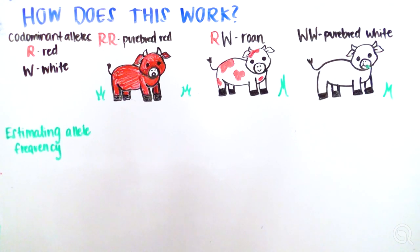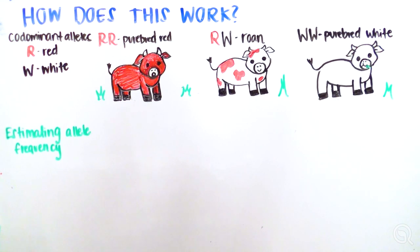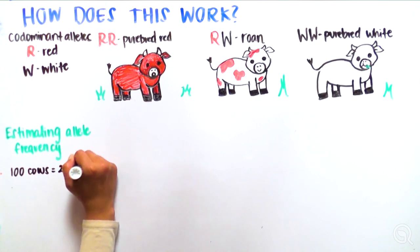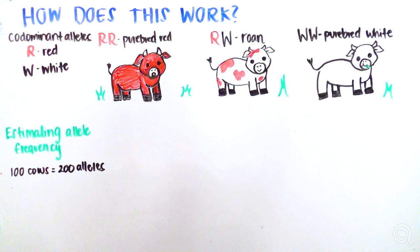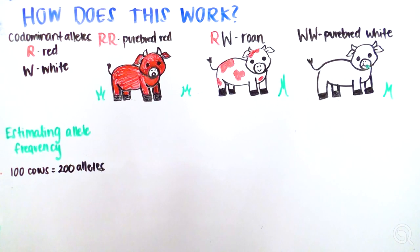Let's do some calculations. Let's estimate the frequency of the alleles by dividing the number of times an allele is identified in the population by the total number of all the alleles of that specific gene in the population at a given time. In this population, let's say there are 100 cows, each of which have two alleles, R and W, for color, meaning the total number of alleles in the population is 200.